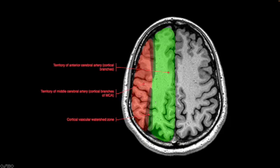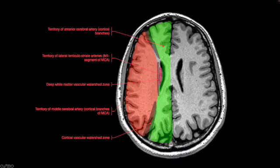The red is supplied by the middle cerebral artery, and this is the right side. And then we'll notice there's an area of shading here that gets a little bit of supply from both of these vascular territories, both the anterior and the middle. And those are referred to as the watershed zones or the border zone vascular distributions. Moving inferiorly through the cerebral hemispheres, again, the green is supplied by the anterior cerebral artery.